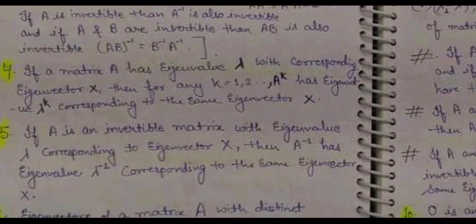The next important property: if a matrix A has eigenvalue lambda with corresponding eigenvector x, then for any value of k equal to one, two, three, and so on, A to the power k has eigenvalue equal to lambda to the power k. So as you change the matrix to A^k, the eigenvalue changes to λ^k, and the corresponding eigenvector remains the same.